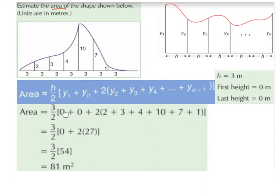0 plus 0 is just 0. 2 plus 3 plus 4 plus 10 plus 7 plus 1 is 27, and 2 times 27 is 54. 3 over 2 multiplied by 54 is 81 metres squared. So the approximate area of this shape is 81 metres squared.